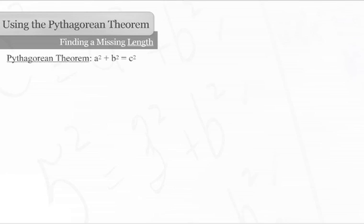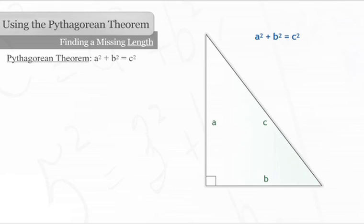The Pythagorean Theorem states that for every right triangle, the sum of the squares of the lengths of the legs equals the square of the length of the hypotenuse. If you know the lengths of two sides of a right triangle, you can use the Pythagorean Theorem to find the missing length.